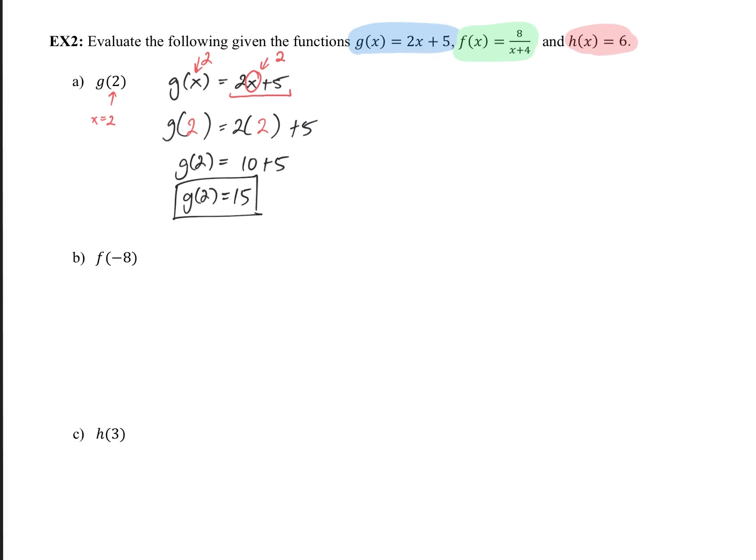Alright, let's take a look at b. b says, f of negative 8. So, now, we're replacing our x values with negative 8. Let's take a look at the original function. So, f of x equals 8 divided by x plus 4. So, this is saying, wherever we see x, we're going to replace it with negative 8. So, let's go ahead and fill that in. So, f of negative 8 is going to equal 8 divided by, and here's the x value right here, replace the x with negative 8 plus 4.